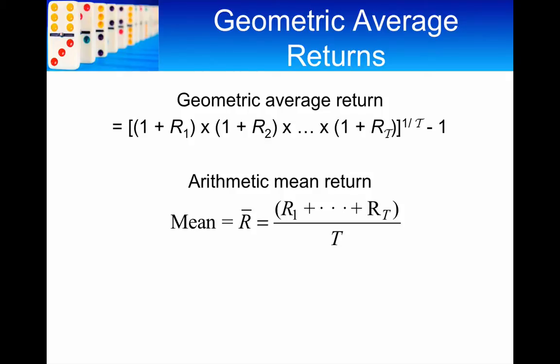The other method we use is the arithmetic average return or the arithmetic mean return. And that one, you just add up the returns in each period and then divide by the number of periods. The arithmetic average return does not incorporate compounding. So the arithmetic average return effectively just tells you your average return made in any one year. Whereas the geometric average return tells you the average value created over the full period.